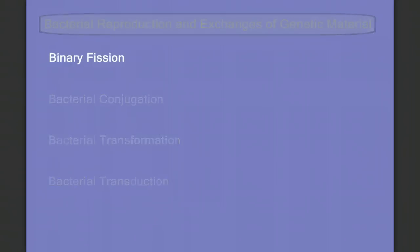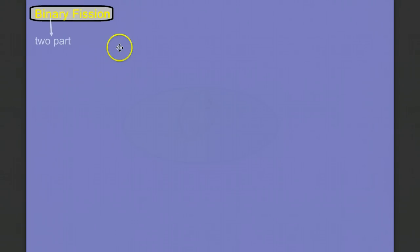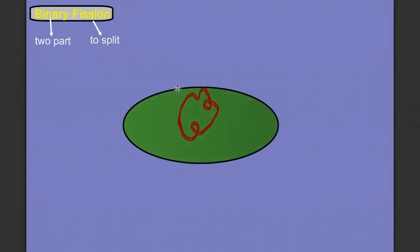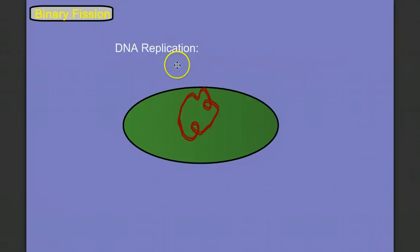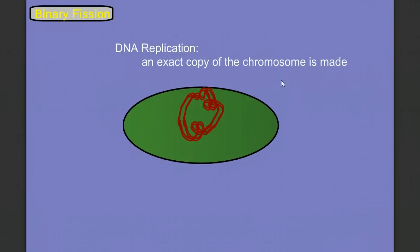We'll start with binary fission. Binary fission means two parts — binary — to split into two. Here's our bacteria cell. We see that it has this one main circular DNA, or chromosome. And in the first step of binary fission, we have to replicate this chromosome, so we make an exact copy of it.